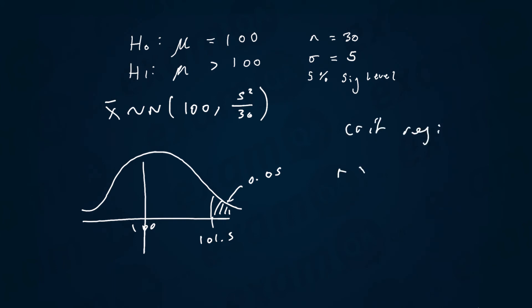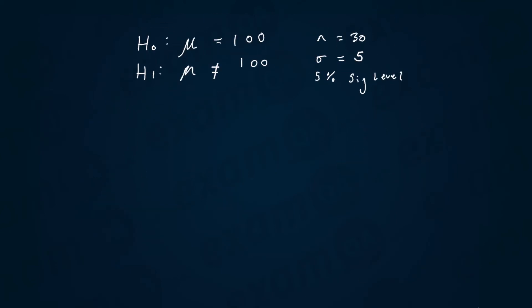And there we go — the upper critical region is 101.5, so the critical region is when x̄ is greater than 101.5. You always write x̄ and then use whatever sign appears in the alternative hypothesis. Now let's finish by doing a two-tail test.